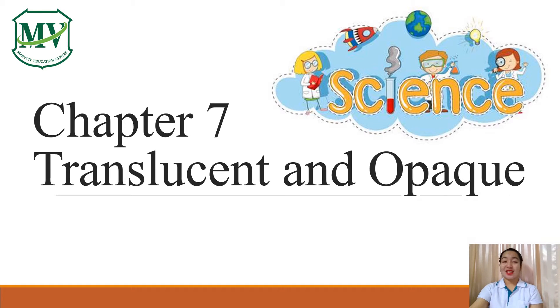Hello everyone! Today we are going to study Chapter 7. In this chapter, we will talk about translucent and opaque objects. Are you ready? Let's get started!